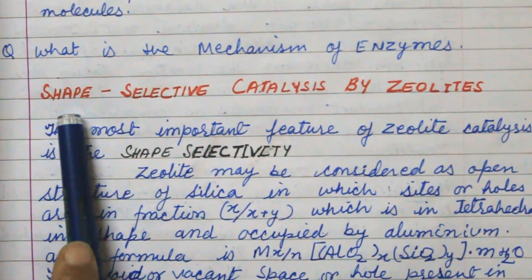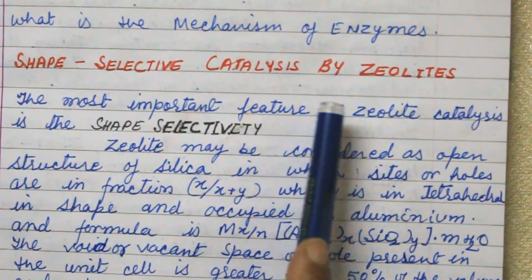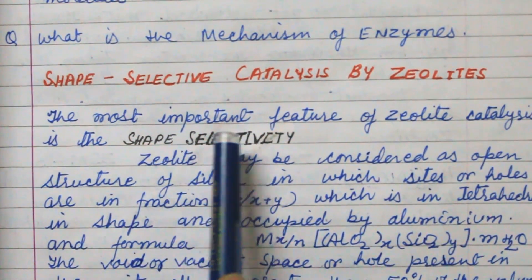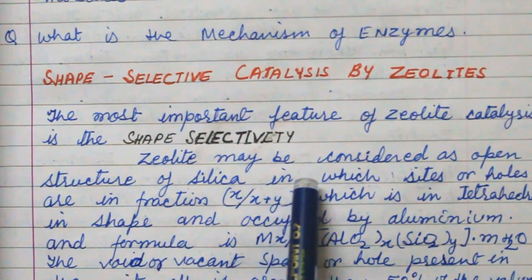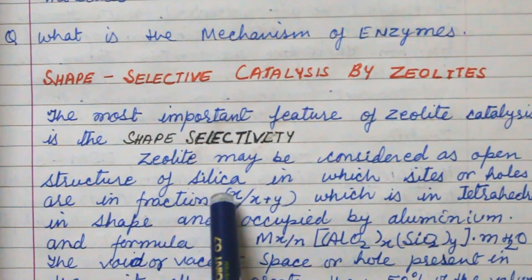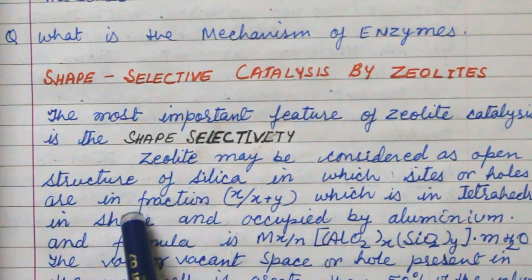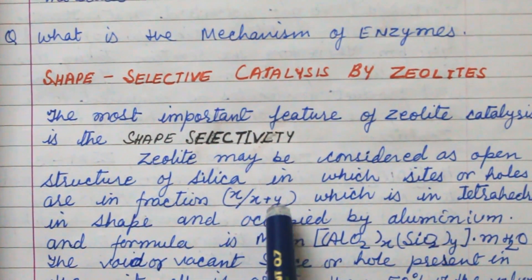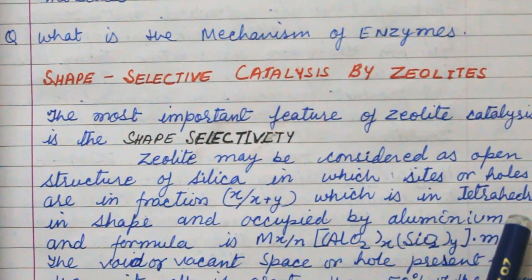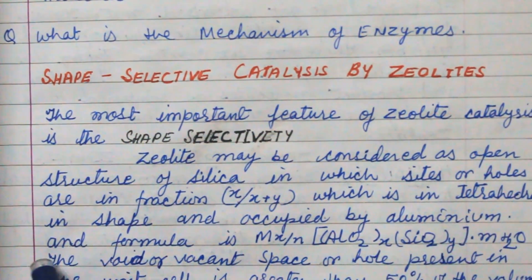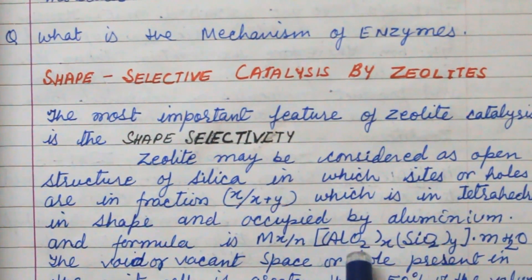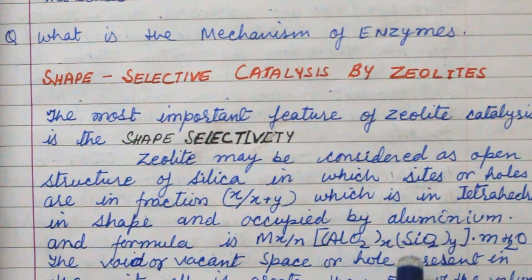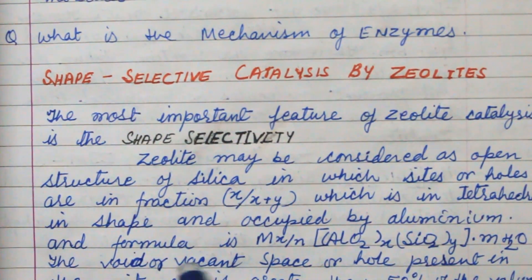Hello students, today my topic is shape-selective catalysts by zeolite. The most important feature of zeolite catalyst is the shape selectivity. Zeolite may be considered as an open structure of silica in which the Si/(Si+Al) ratio is tetrahedral in shape, occupied by aluminium, and the formula is M(x/n) [(AlO2)x (SiO2)y] · m H2O.